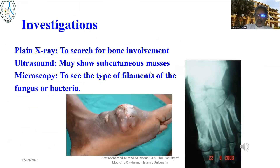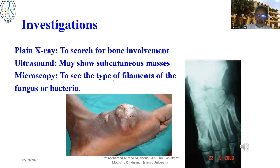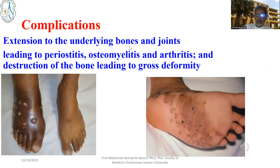For investigation, the most important thing is to do a plain X-ray, anteroposterior and lateral, to look for periosteal reaction, bone cysts, and destruction of bone. Ultrasound may also show the subcutaneous masses, and microscopy can be done for filaments of fungi or bacteria. Complications include destruction of bones and joints, causing periostitis, osteomyelitis, arthritis, and gross deformities.